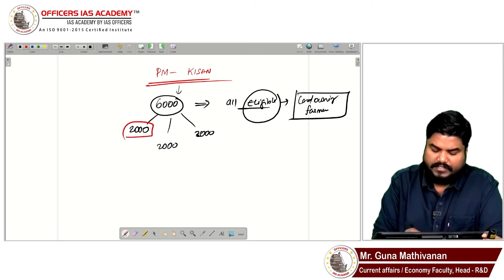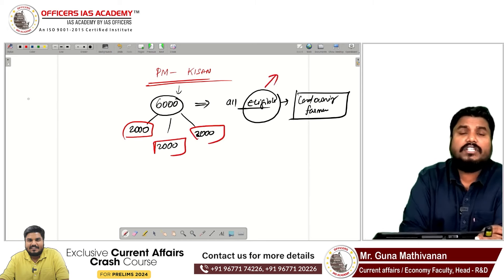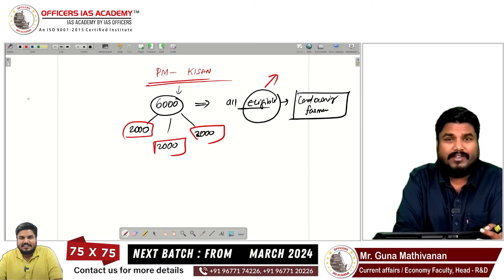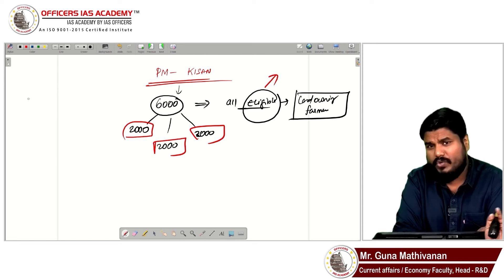So what are the eligibility conditions? If you are an institutional farmer, for example a corporate farmer, money will not be given. If you are a Group A officer or an assistant section officer with land, they will not give it to you.